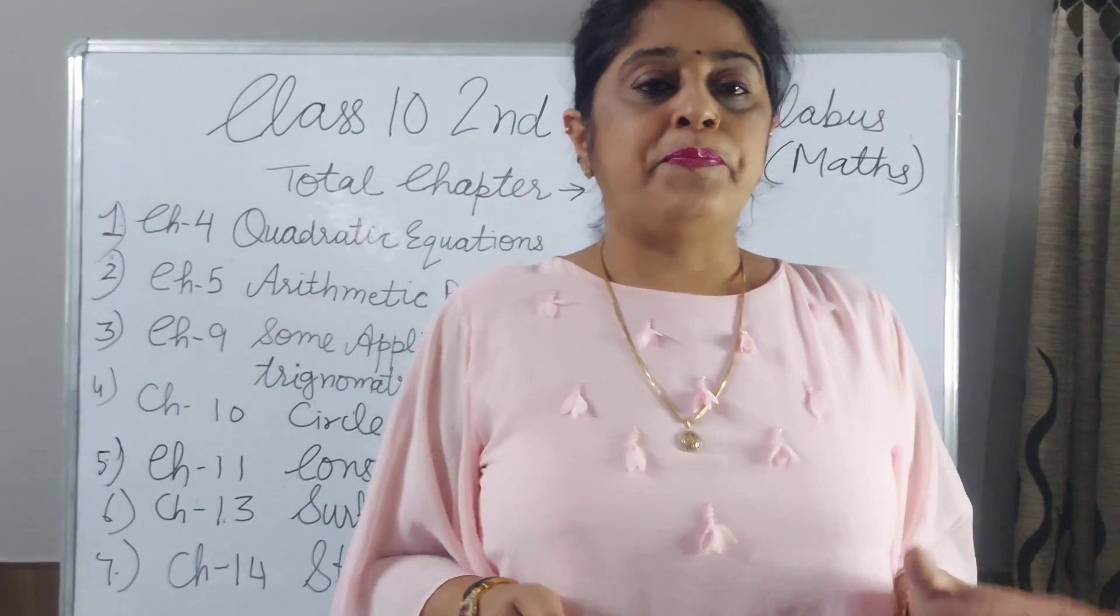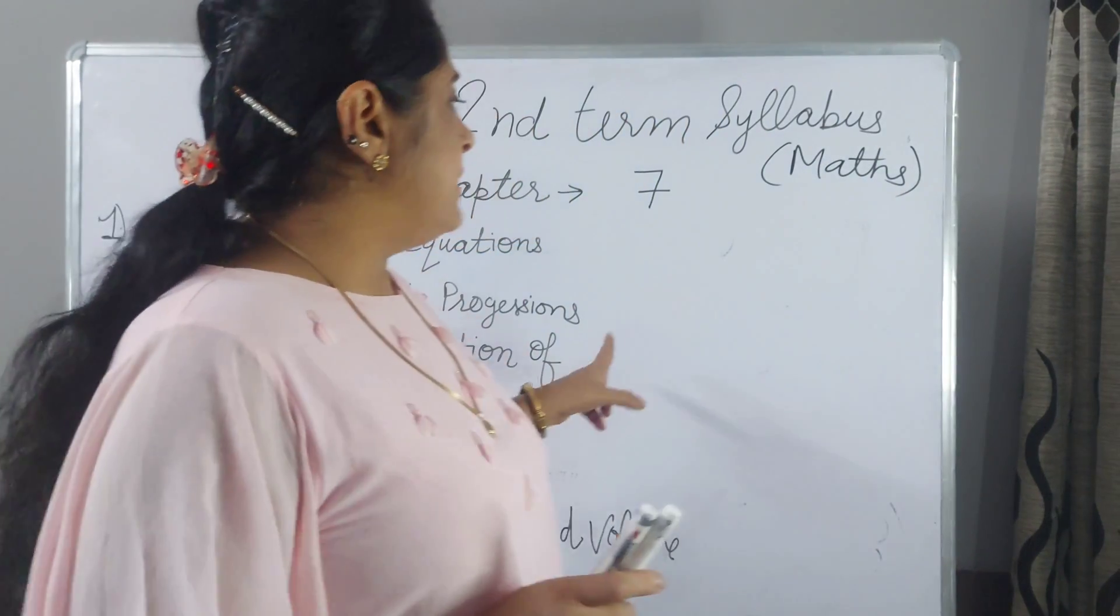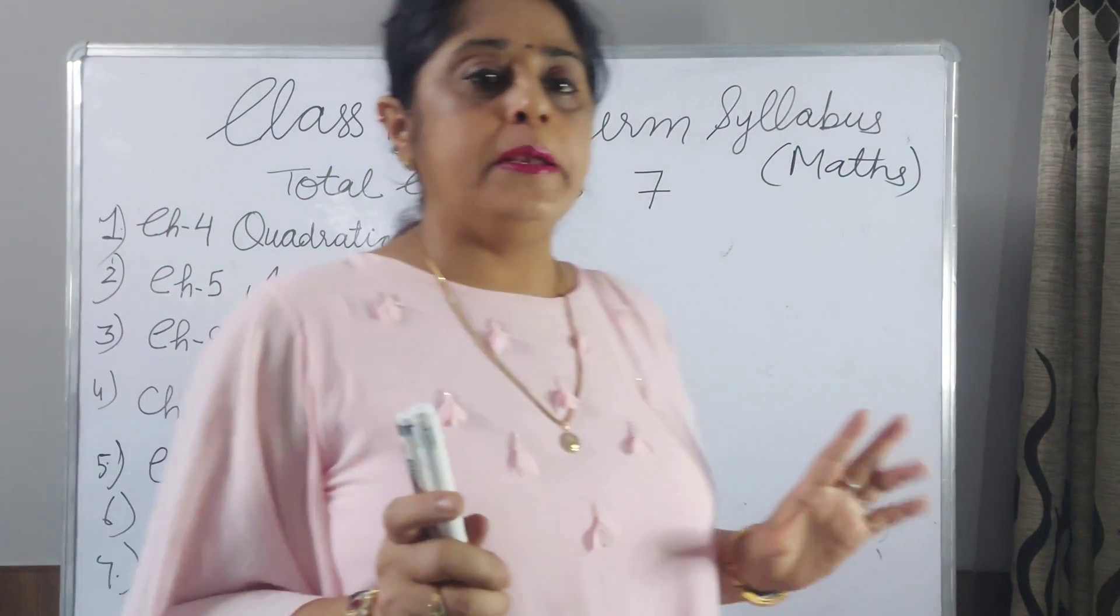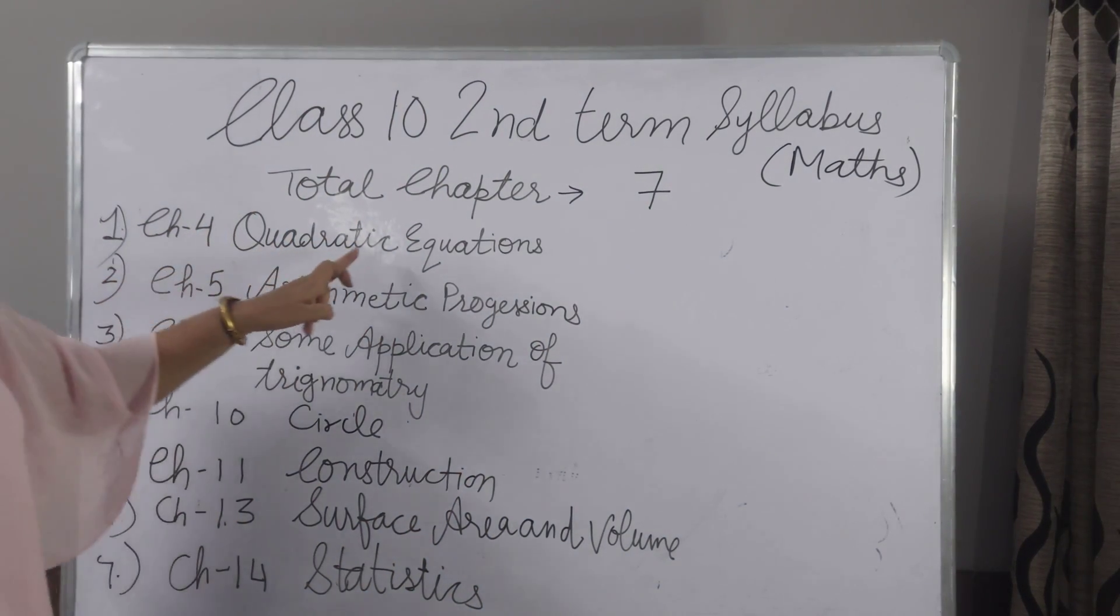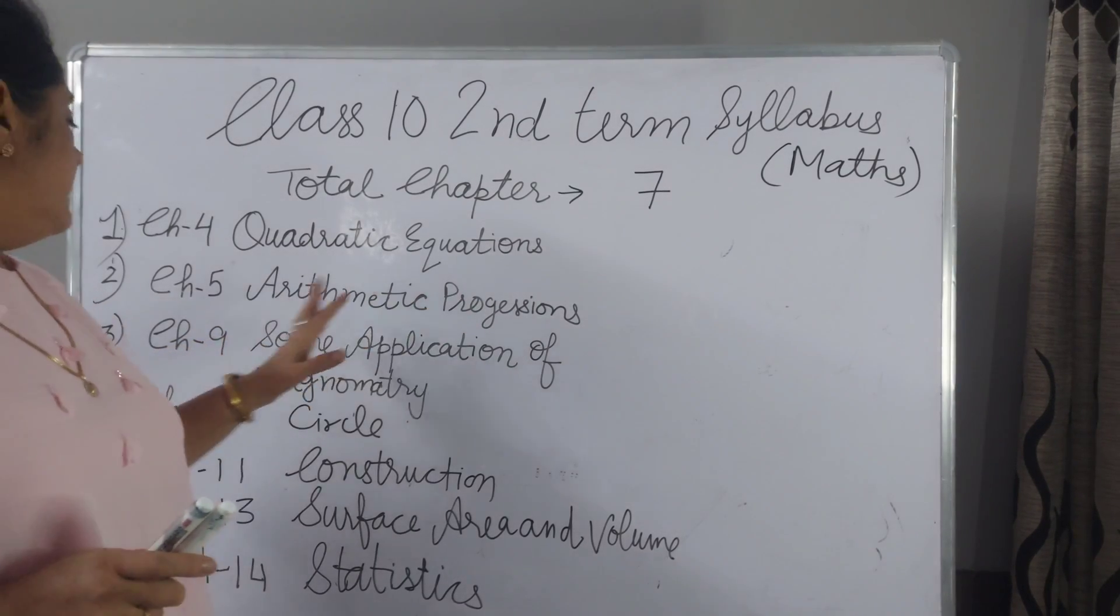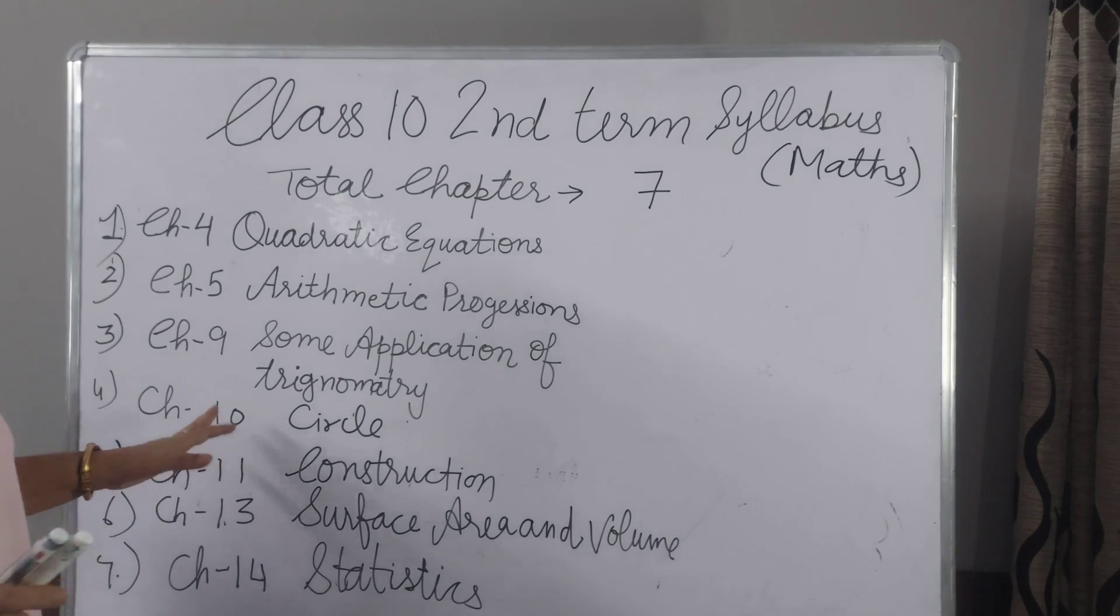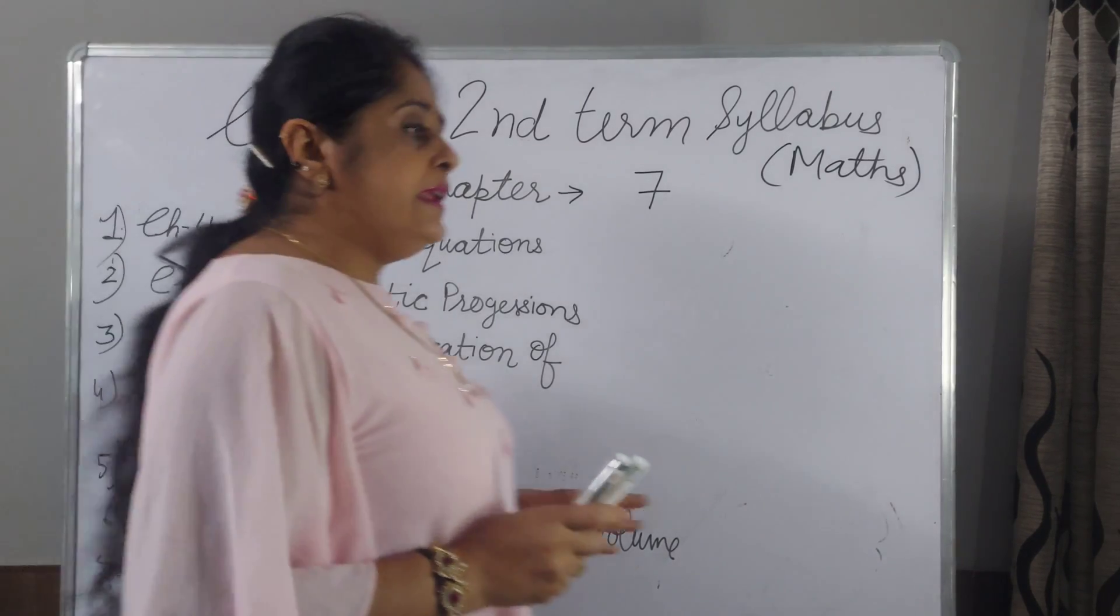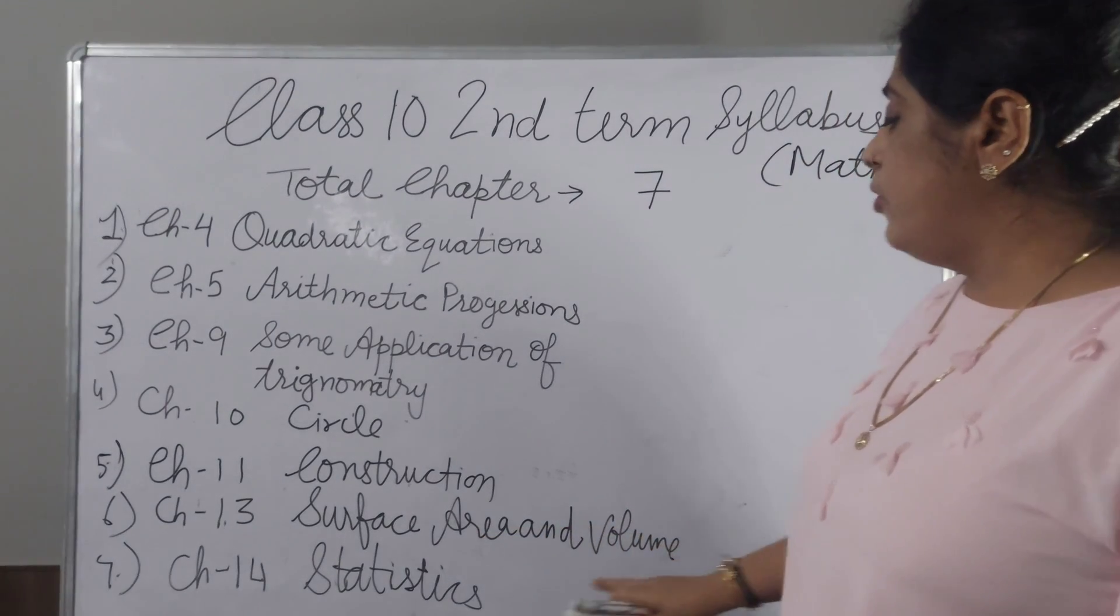In 10th math syllabus there are 7 chapters. Total chapters are 15 but in term 2 there will be 7 chapters. Chapter 4 Quadratic Equation, Chapter 5 Arithmetic Progression, Chapter 9 Some Application of Trigonometry, Chapter 10 Circle, Chapter 11 Construction, Chapter 13 Surface Area and Volume, Chapter 14 Statistics.